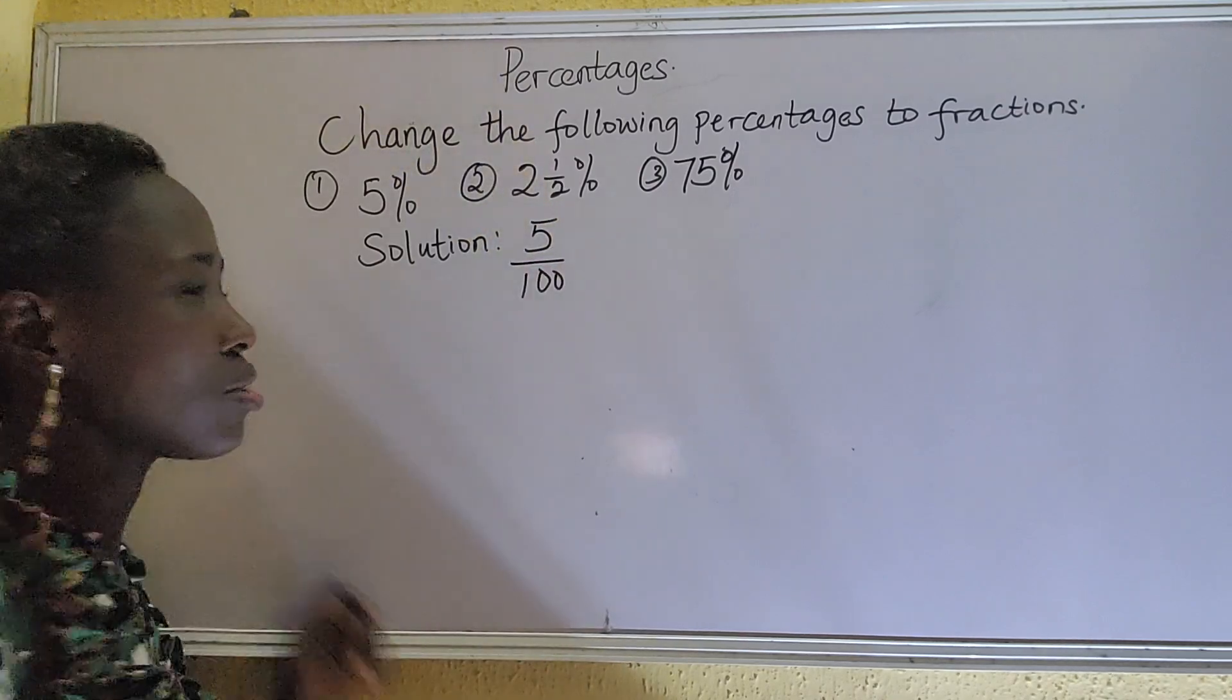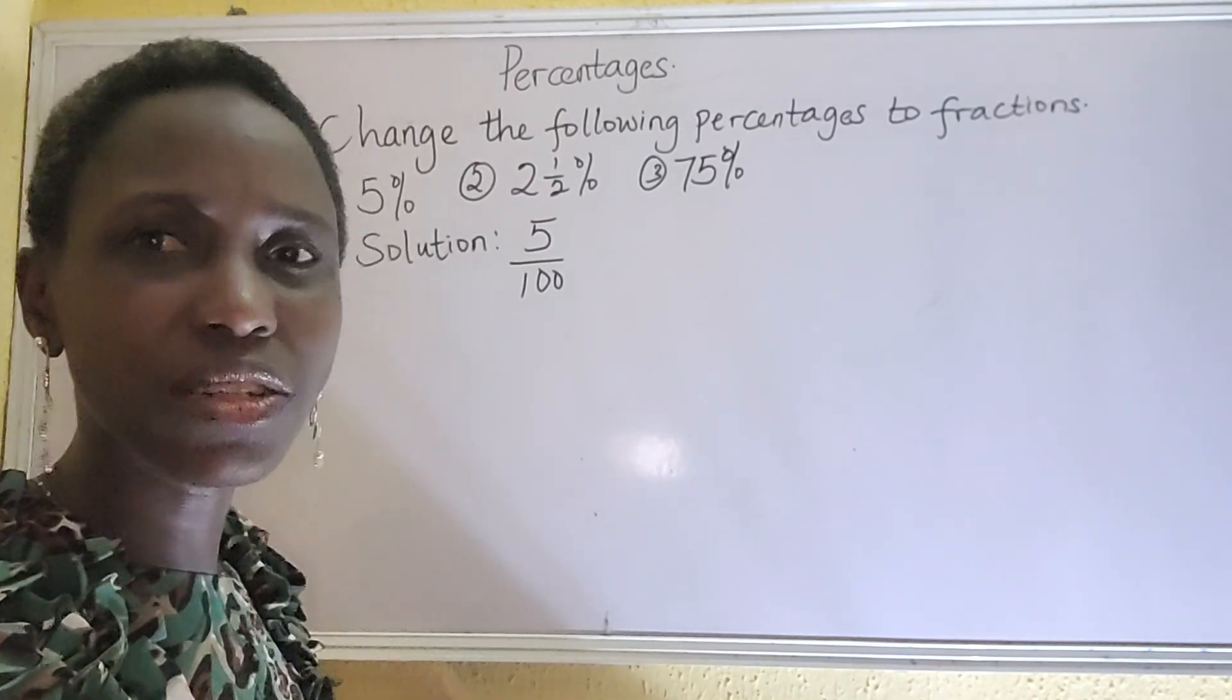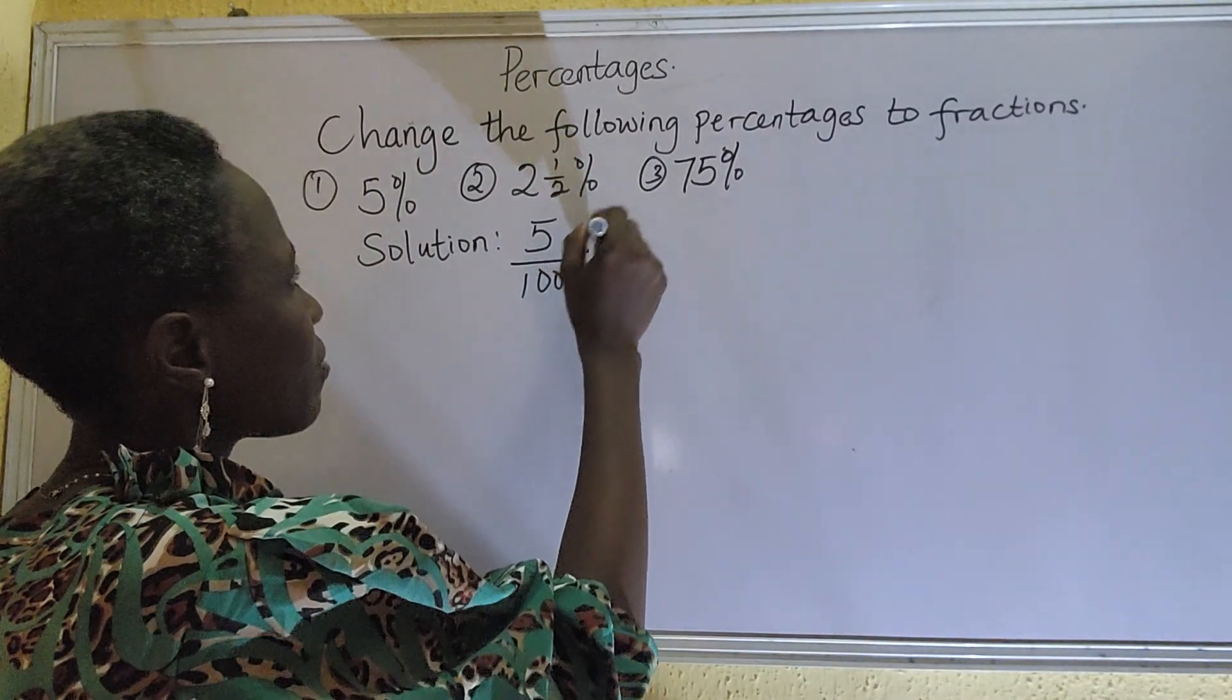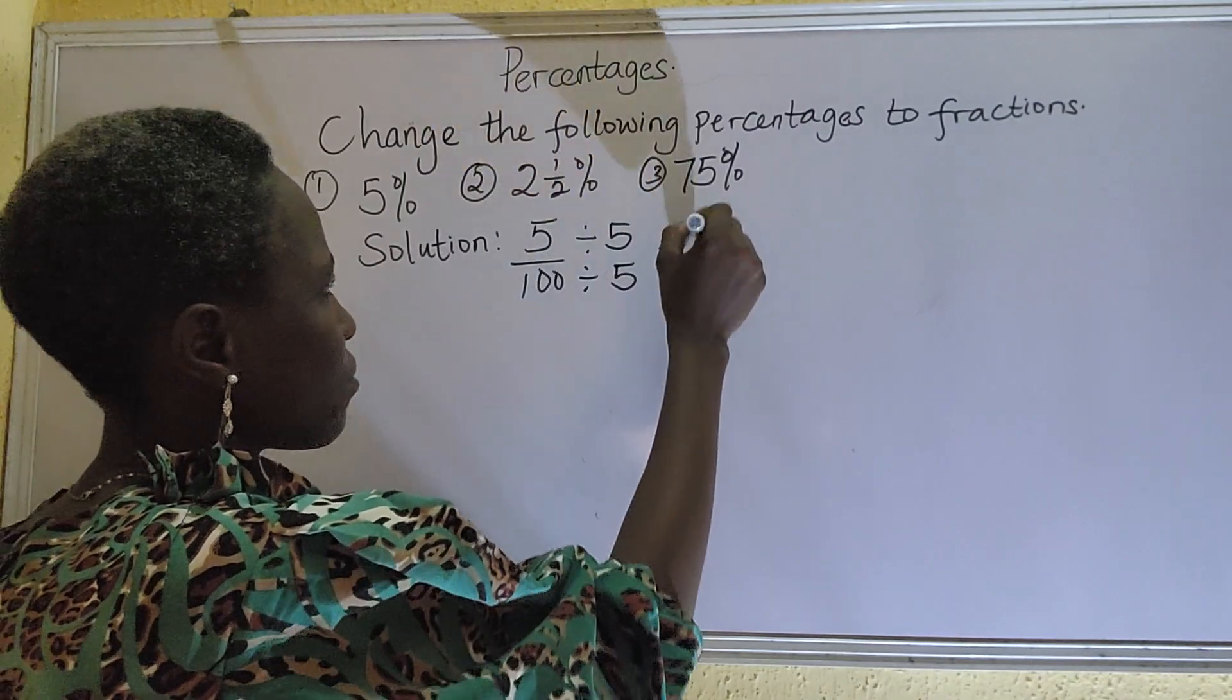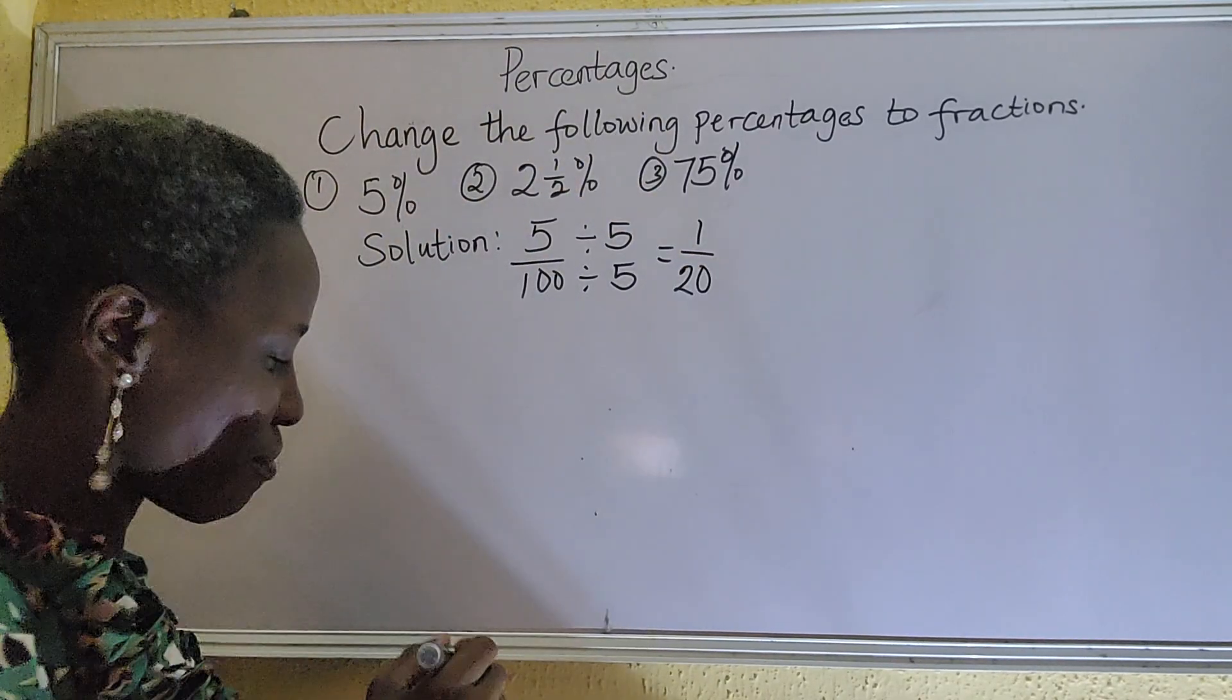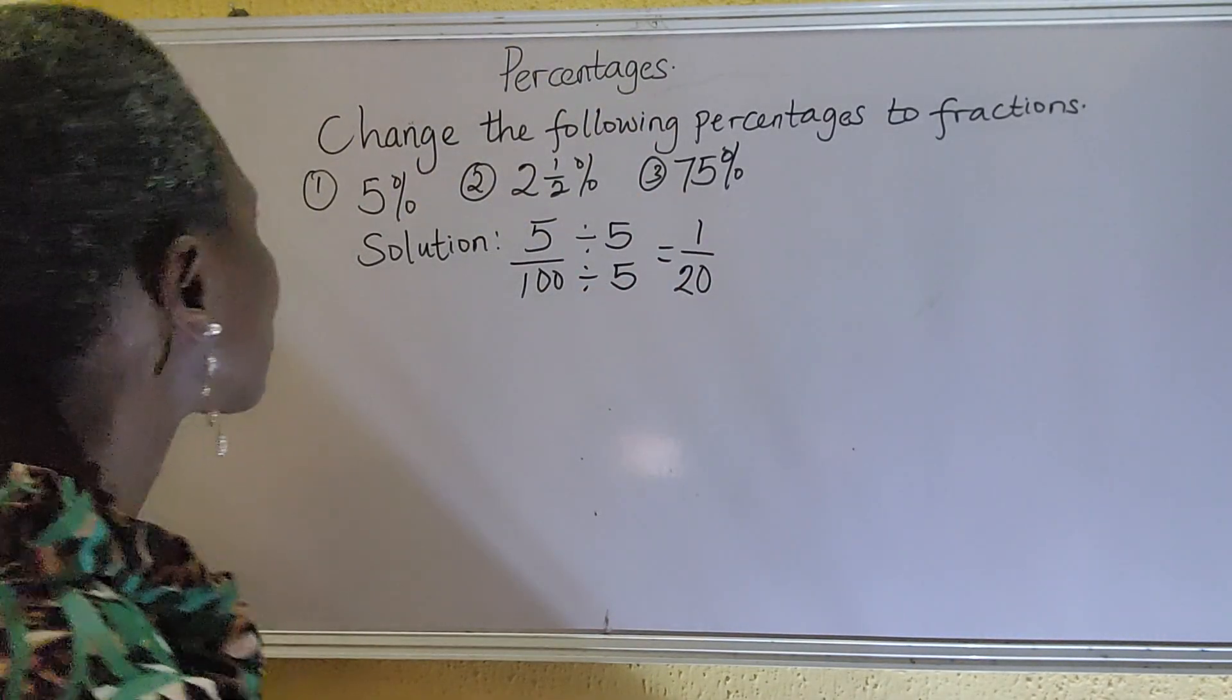In fraction we always reduce to the lowest term. We ensure that we are able to reduce the fraction until we can no longer divide. As you can see, 5 can divide both sides. So we have 5 divided by 5 is 1, 10 divided by 5 is 2, and then we are left with zero. So 5% in fraction is 1 over 20.